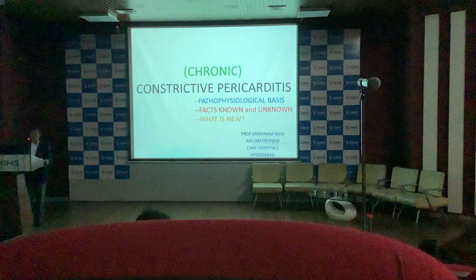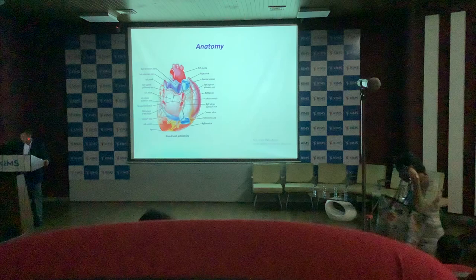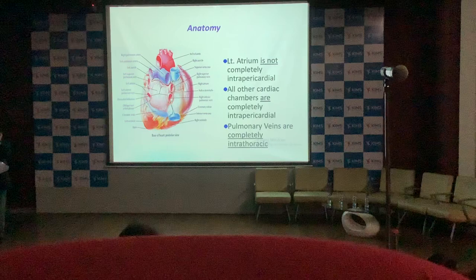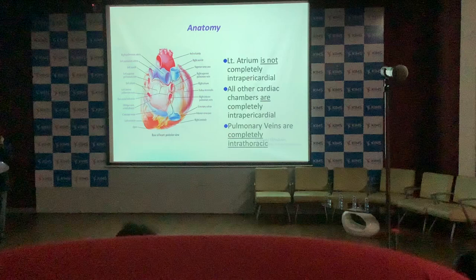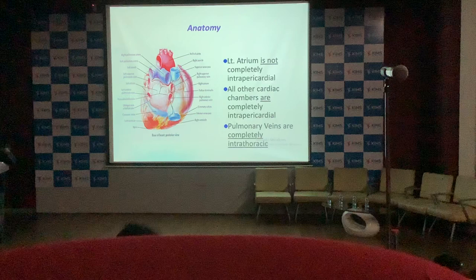Before that, you need to understand a little bit about epidemiology and anatomy of the pericardium and pericardial diseases. When you look at the heart, everything is included within the pericardium — including the root of the aorta, proximal part of the superior vena cava, and inferior vena cava — except the pulmonary veins and part of the left atrium, which are not within the pericardial sac.